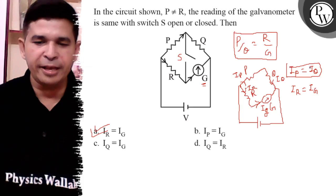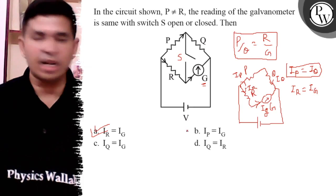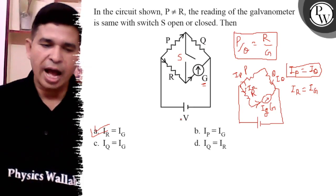There is no option Ip is equal to Iq. So final answer is A, Ir is equal to Ig.